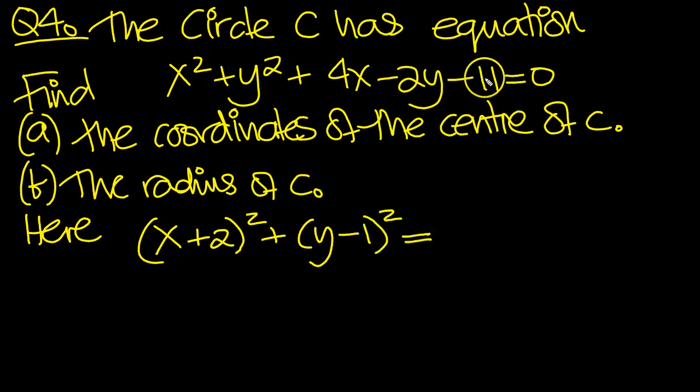Move the minus 11 over to become plus 11. Now when we expand these brackets, not only will we get the x squared plus 4x, we'll also get a 4. So we'd better put a 4 here to counterbalance that. And similarly, we'll get the y squared minus 2y from expanding this bracket, but we'll also get a plus 1. So again, put a plus 1 here.